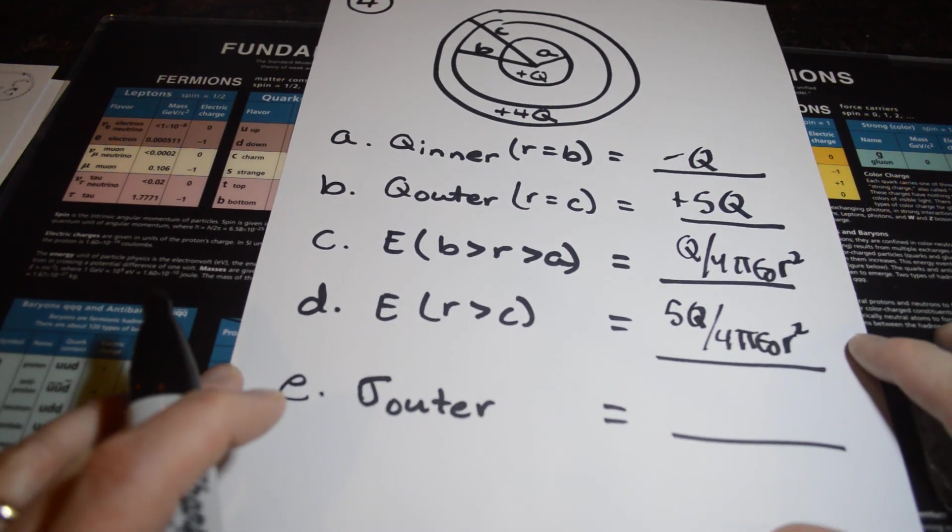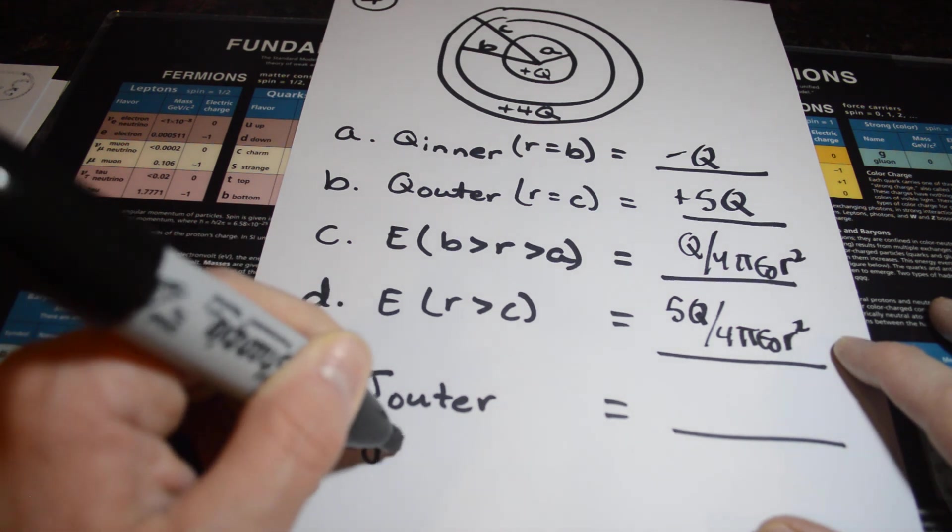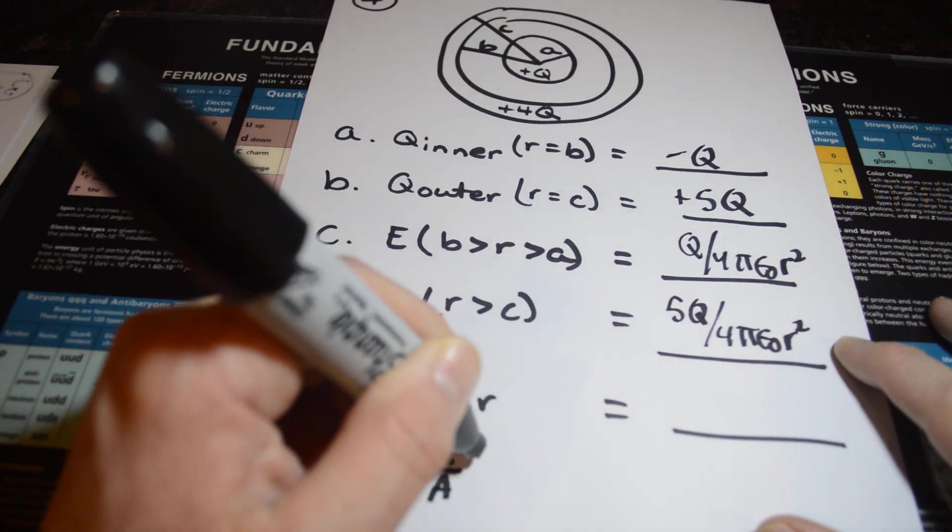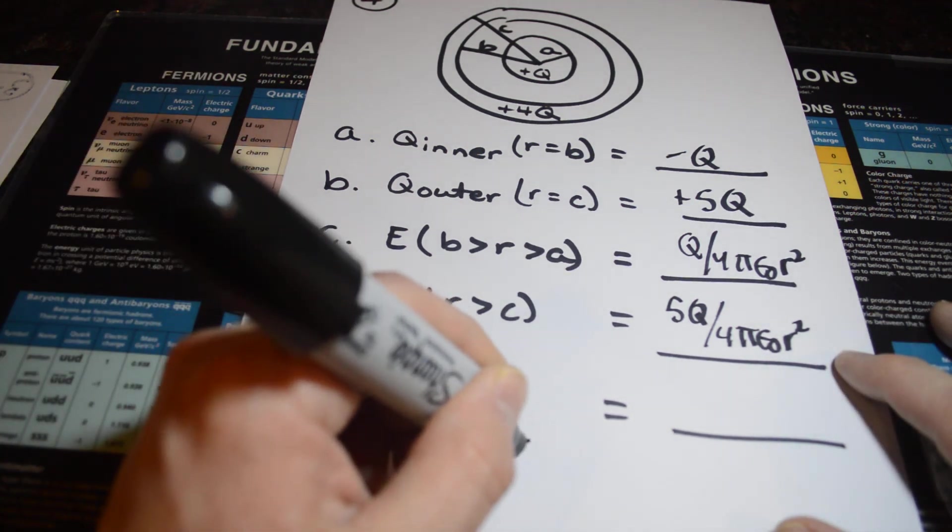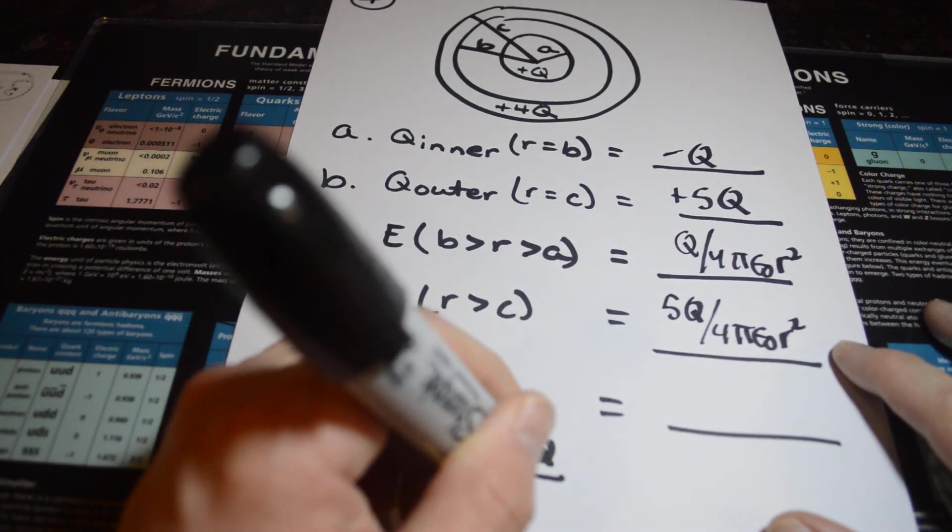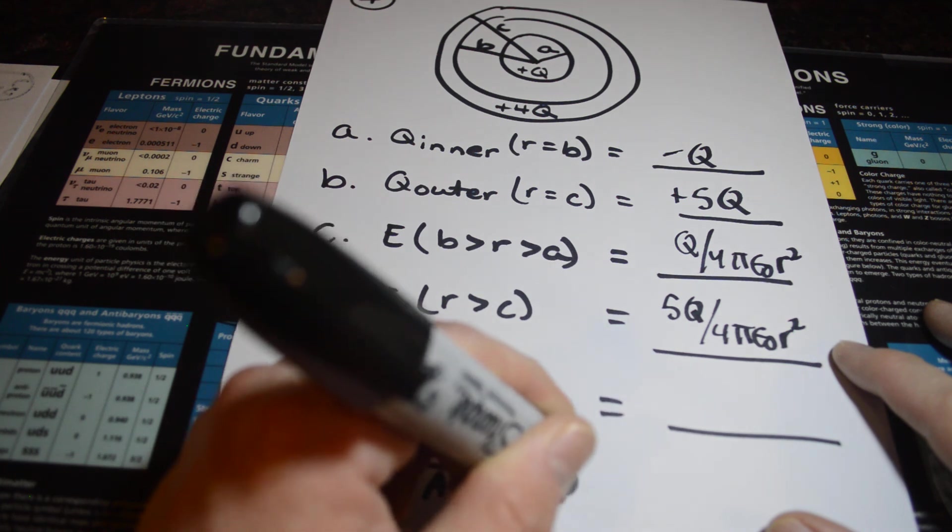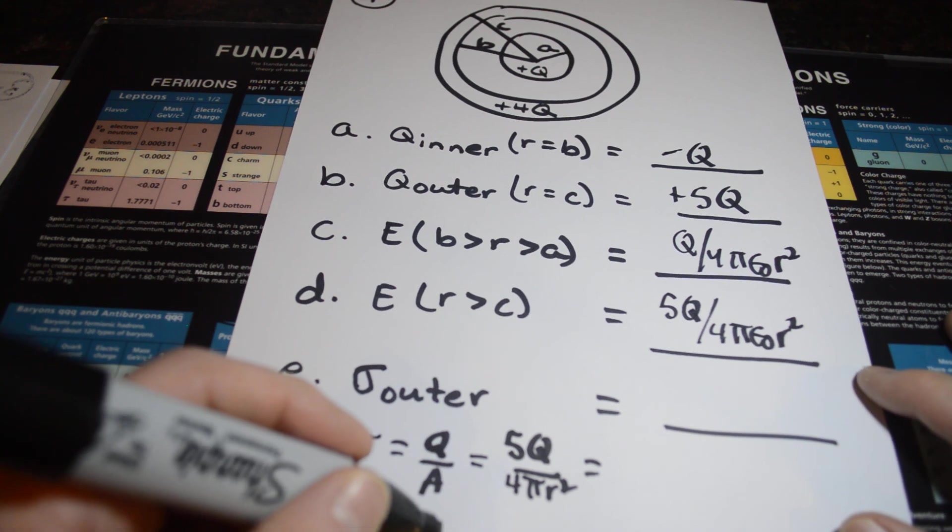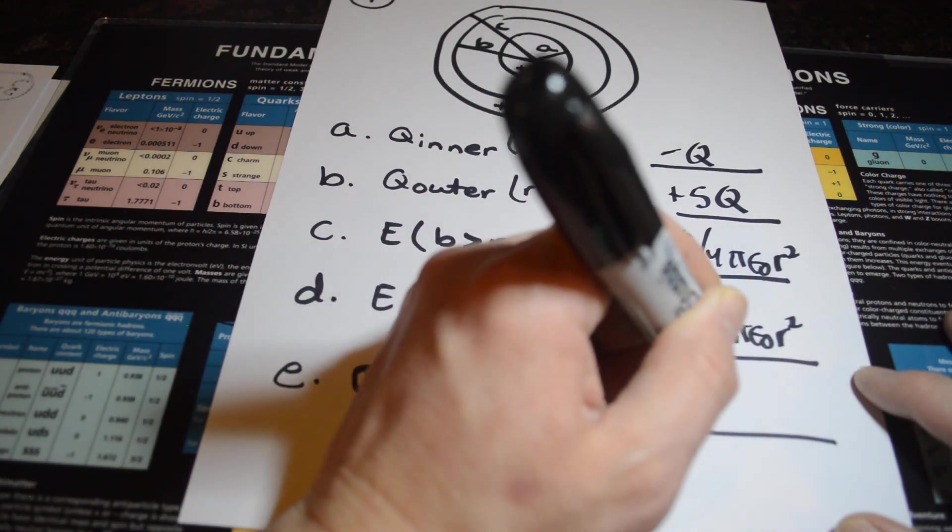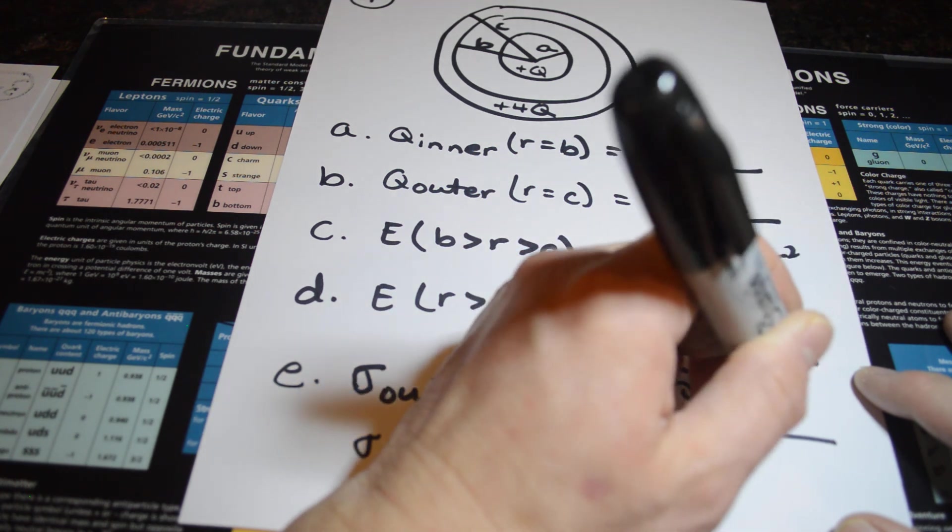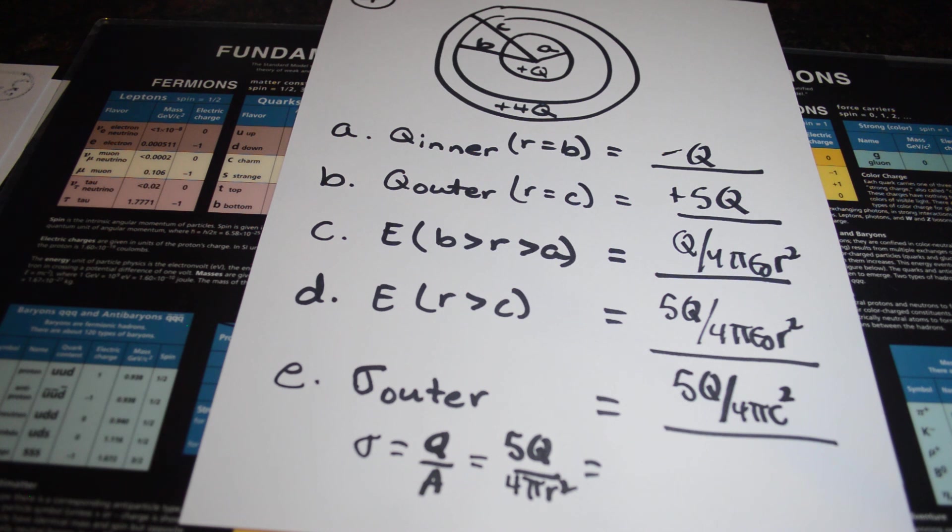Last thing is just to remind you, what do we mean by surface charge density? Surface charge density is charge over area. In this case, on the outer shell, the charge is 5Q. The surface area would be 4 pi R squared, but is it not at radius C? So I think our answer is probably 5Q over 4 pi C squared should be our answer. I hope that was reasonable for you as we went through it.